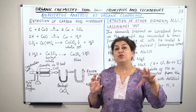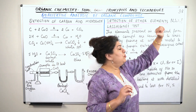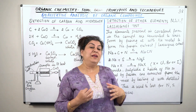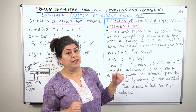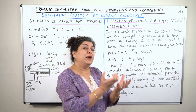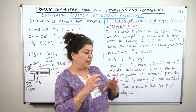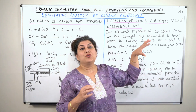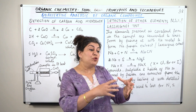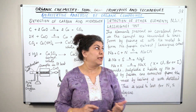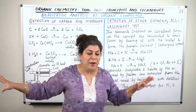After that, if there are any functional groups, other elements may be present — such as nitrogen, sulfur, or halogens. To identify these elements, we make a Lassaigne's extract, which converts the organic covalent compound into ionic compounds. This allows us to detect whether nitrogen, sulfur, or halogens are present.